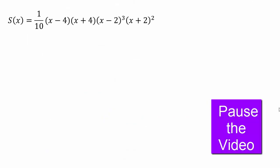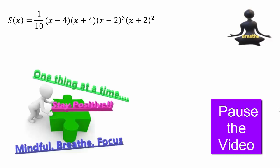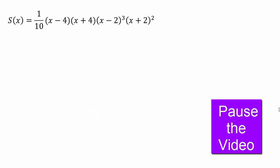Let's try a more complex example. Don't get overwhelmed — just take it one step at a time. Look at all intercepts: x-intercepts, y-intercept, and end behavior, then put it all together. The steps are: set each factor to zero to get x-intercepts; set x to zero to get the y-intercept; look at the highest power when expanded to determine end behavior; then graph it.